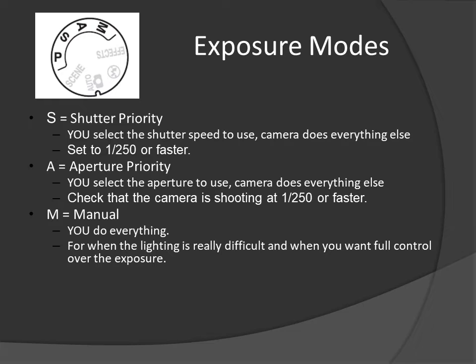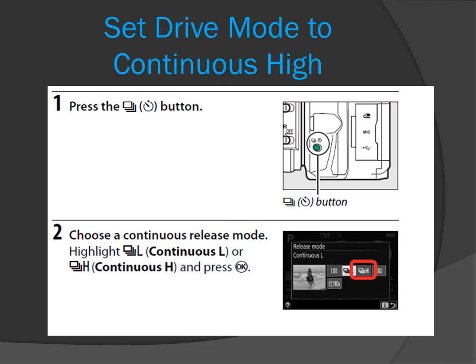Exposure mode: shutter priority, aperture priority, or manual. Set the drive mode to continuous high. You press the shutter drive button on the left side of the camera, as shown in the top picture. On the back screen, this is what's going to appear.